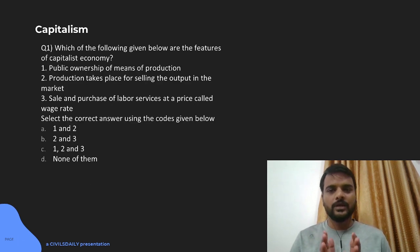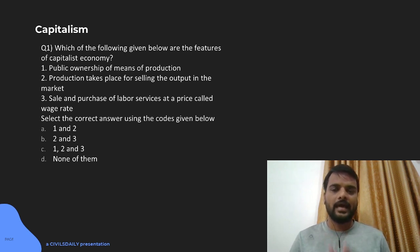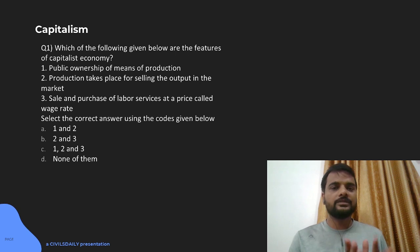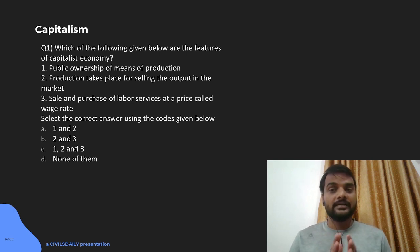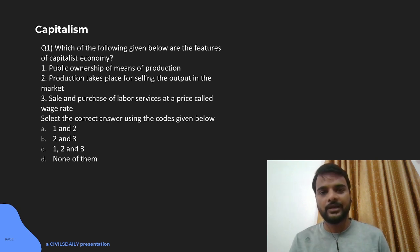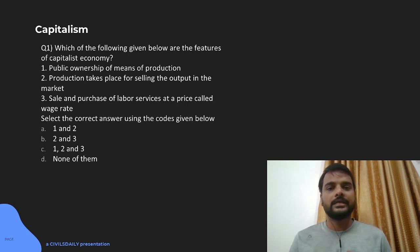The first question is: which of the following given below are the features of the capitalist economy? This is a very simple question and you just have to understand the basic differences between capitalism as a system and communism as a system to differentiate between both of them. The first statement is: public ownership of means of production. If you understand the basic concept of capitalism, that is the private ownership of means of production — it visualizes a system where there is an invisible hand which maintains the stability in the system, in which everybody is competing in its own interest and it works out well for everyone.